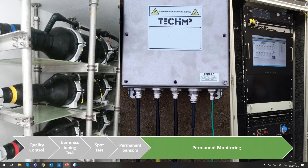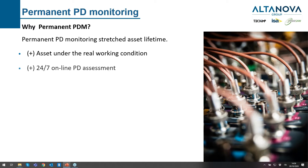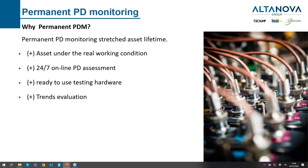The highest solution we can provide the customer is permanent monitoring. The asset works in real working conditions all the time. We have 24/7 online PD assessment. We also have testing hardware ready to use if we want to perform a manual spot measurement — for example, to investigate an alarm further; we just need to connect a laptop to the instrument. We can also have very good trend evaluation.